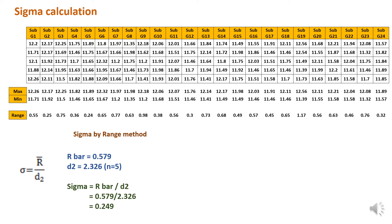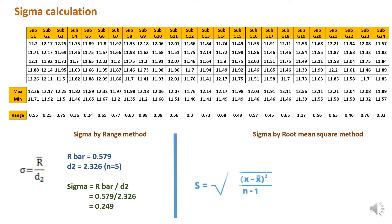Now we need to calculate sigma using the root mean square method, which is useful for Pp and Ppk calculation. We can use the standard deviation method directly — no need for individual steps. We use the Excel function STDEV.S and select all 120 readings to get the value. For this case it is 0.264.